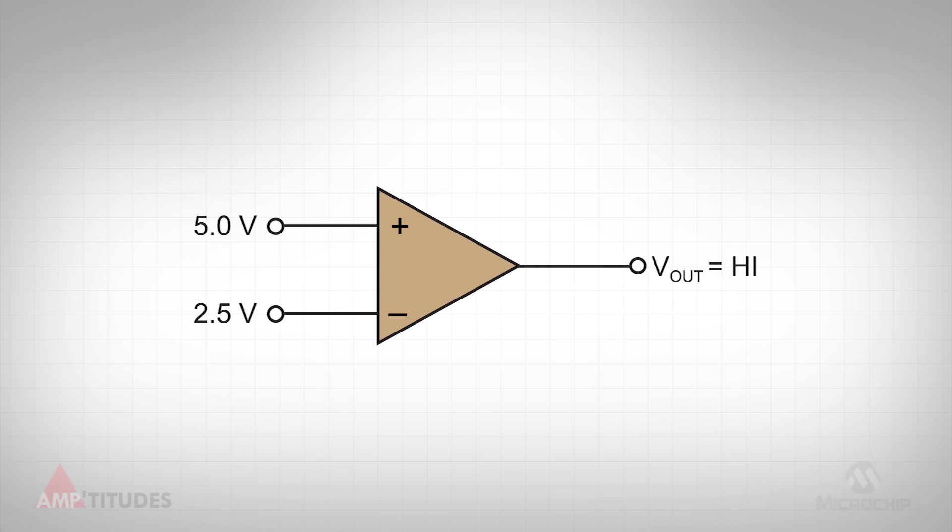As the name implies, a comparator is used to compare the voltages applied to the two input pins. If the non-inverting input is higher than the inverting input, as shown here, the output is high. If the non-inverting input voltage is less than the inverting input, then the output is low, assuming an active high output device.